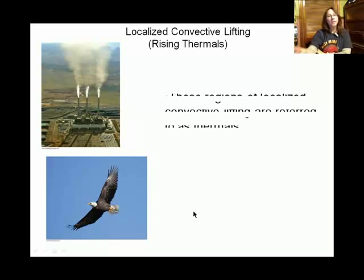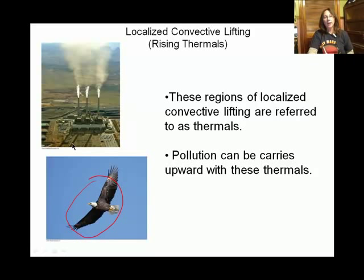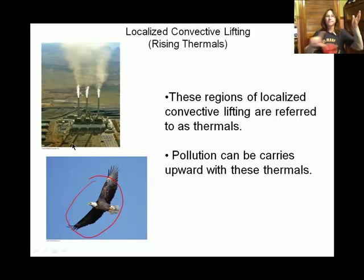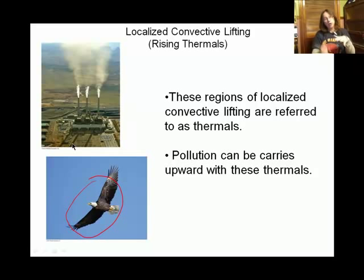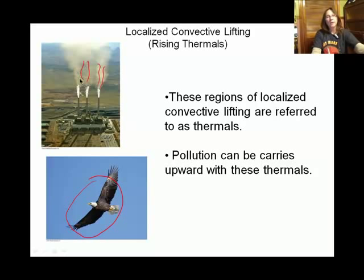This tendency for warm air to rise is actually taken advantage of by raptors — you can see this beautiful eagle here. Also, in the troposphere — the lowest layer of the Earth's atmosphere where our weather occurs — it's warm near the surface and gets colder going up, so we tend to have a gentle convective lifting happening all the time. It's convective lifting that helps pollution relocate from the Earth's surface upward, which is a good thing.